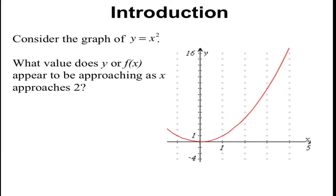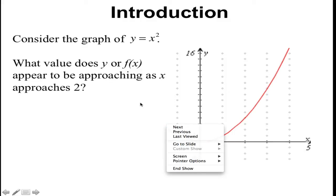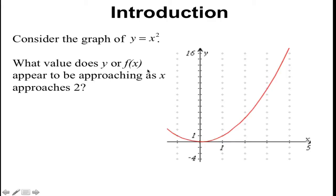For an introduction, let's say we have the graph of y equals x squared. We want to know what is the value of y, or f of x, appearing to be approaching as x is approaching 2. Here is x equals 2. As we are getting closer and closer to this x value, what is the y value of the function getting closer to? If I go up to the graph at x equals 2 and zoom in on this area, I would look from both directions — from the left and the right — and see that the y value is approaching 4.